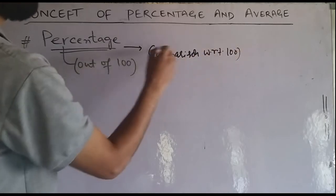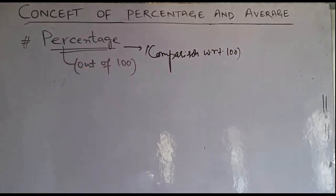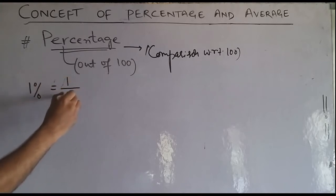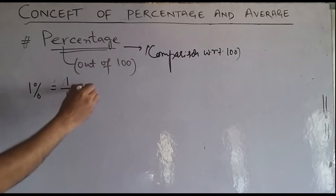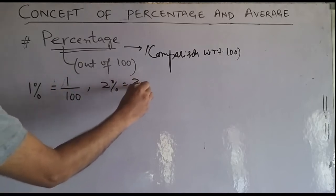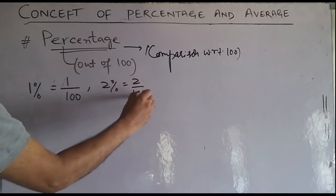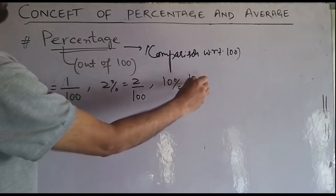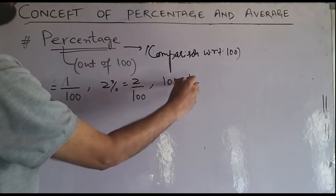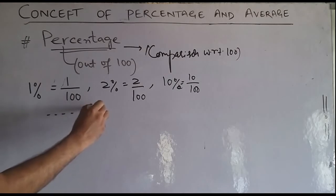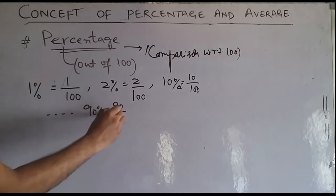Comparison is with respect to 100. The simple way to explain: 10% means 10 out of 100. Similarly, 90% means 90 out of 100.